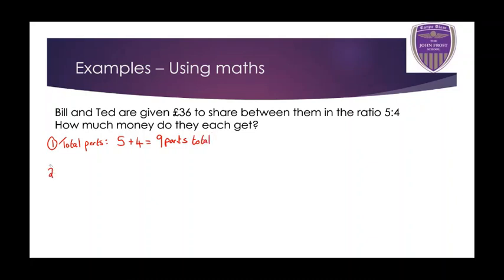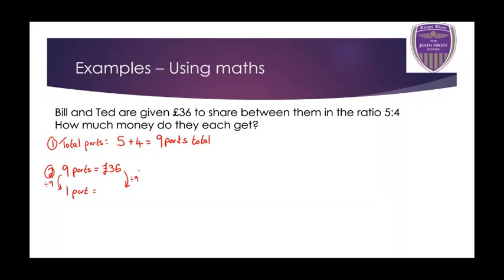Next, we need to find out what 1 part is worth. We know 9 parts is equal to 36 pounds. To get from 9 to 1, I divide by 9. So I do the same to 36 pounds: 36 divided by 9 is 4. So 1 part is worth 4 pounds.